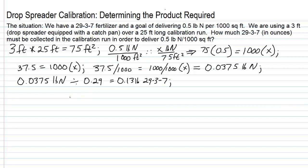And let's do one final step that will make this easier to work with, since this is a small number, and we'll probably be using a small set of scales. Remember that there are 16 ounces within a pound. We have 0.13 pounds. How many ounces would that be? We would take 0.13 times 16, and that equals about 2.1 ounces of 29-3-7.